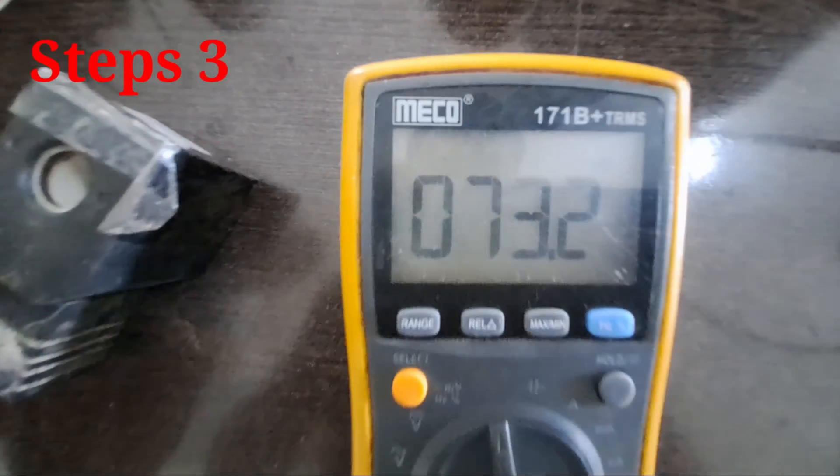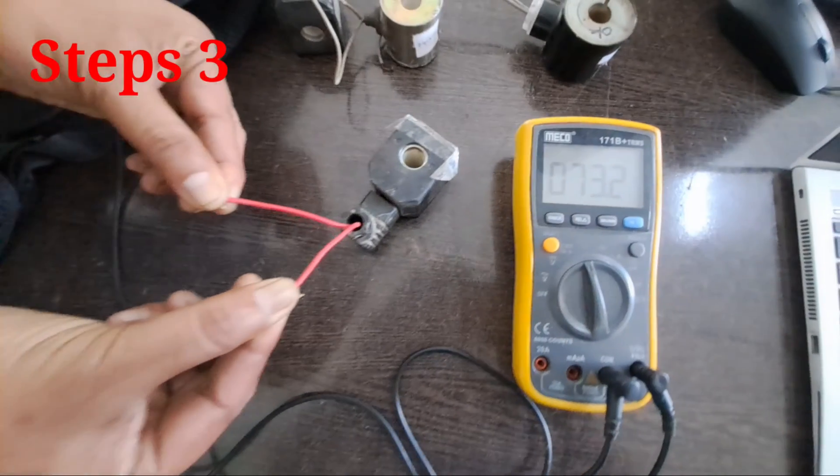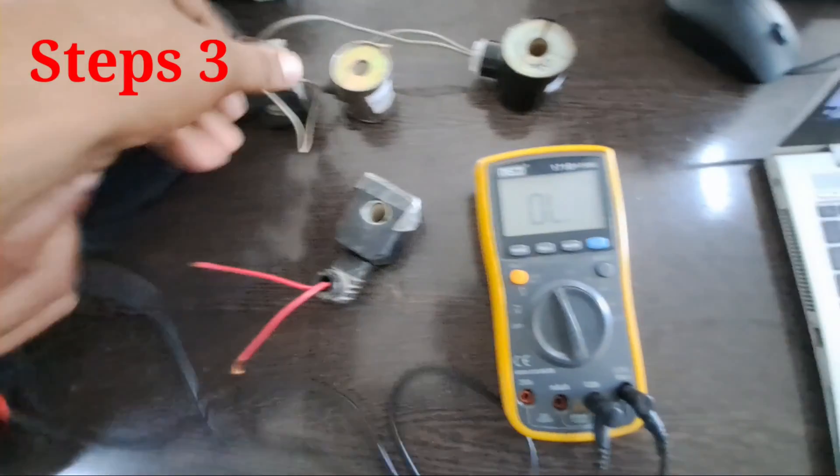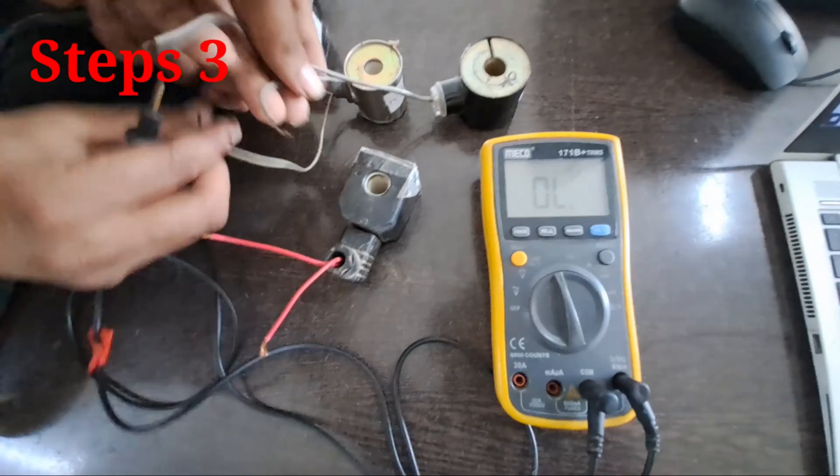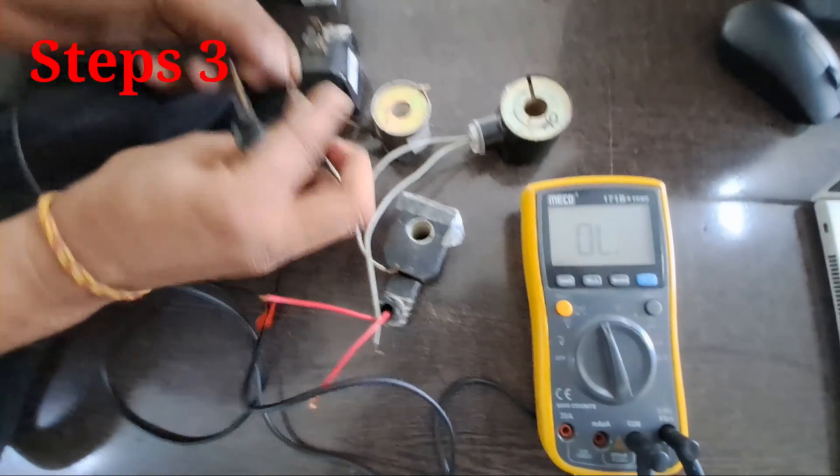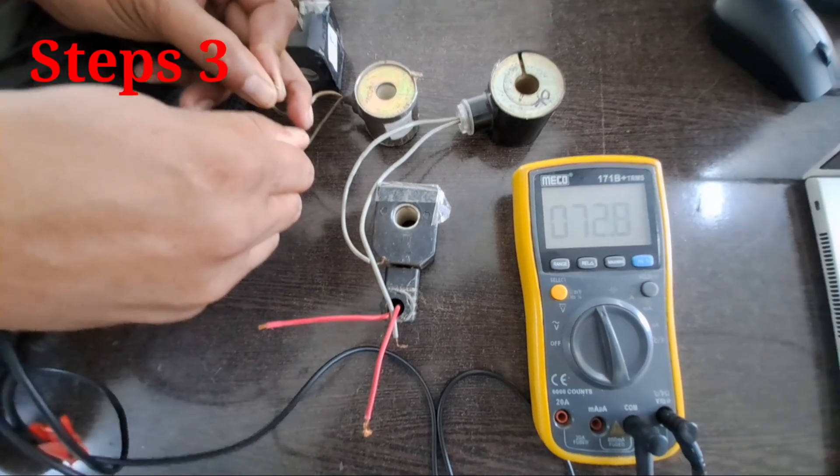Read the number on the multimeter. A functional solenoid coil normally has its resistance within a certain range. This range varies from manufacturer to manufacturer, but definitely not zero. If you have zero ohms, it means the coil is shorted.